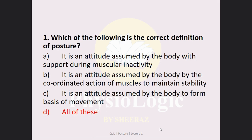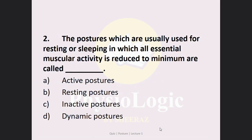MCQ number 2: The postures which are usually used for resting or sleeping, in which all essential muscular activity is reduced to a minimum, are called — Option A: active postures, Option B: resting postures, Option C: inactive postures, Option D: dynamic postures. The correct answer is Option C, inactive postures. These are postures used for resting or sleeping where muscular effort is reduced to a minimum.